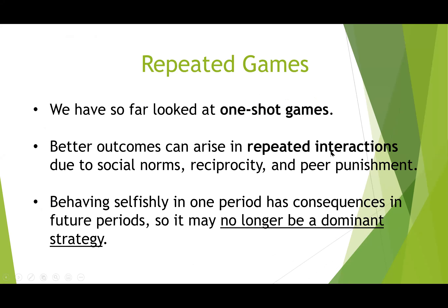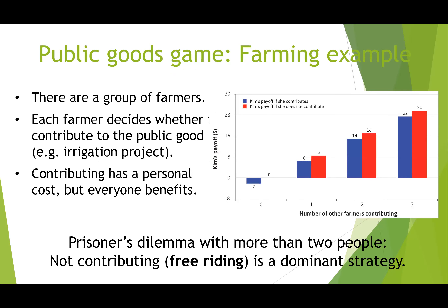A good book for this is 'Game Theory: A Very Short Introduction' by Ken Binmore, which gives a more general view than Core Econ. It covers repeated games in depth. Hopefully that gives an intuitive feel. I'll briefly cover public goods games: a group of farmers each decides whether to contribute to a public good like an irrigation project. Contributing has a personal cost but everybody benefits.